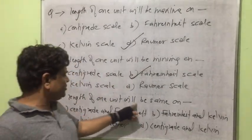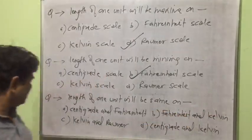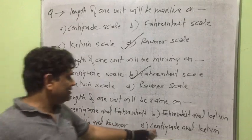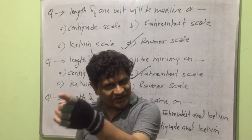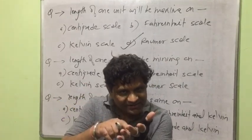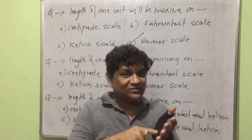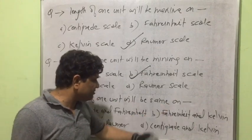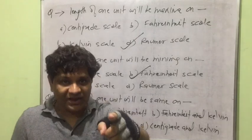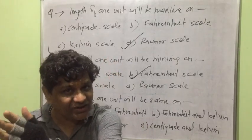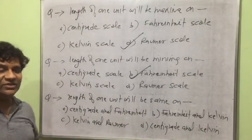Question three: the length of one unit will be the same on which pair of scales? The answer is the centigrade scale and the Kelvin scale. The fundamental interval is 100 degrees Celsius and 100 Kelvin respectively, so 1 degree Celsius equals 1 Kelvin. Therefore, the length of one unit is the same on the centigrade scale and the Kelvin scale.